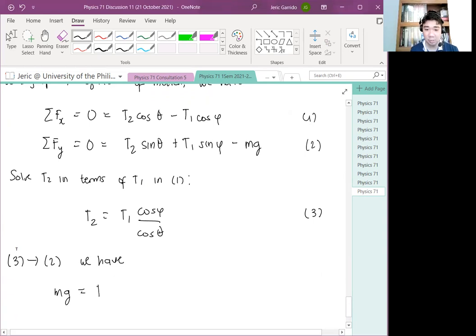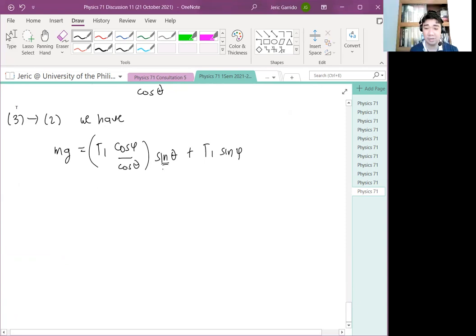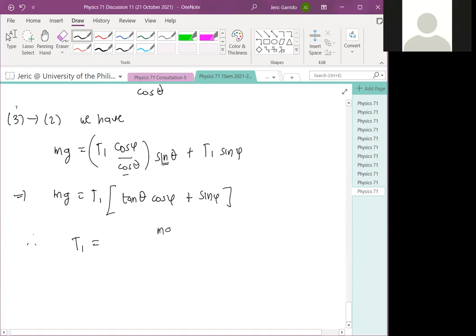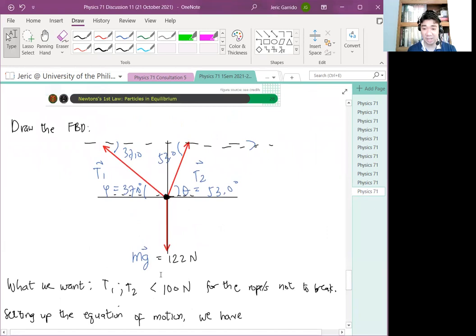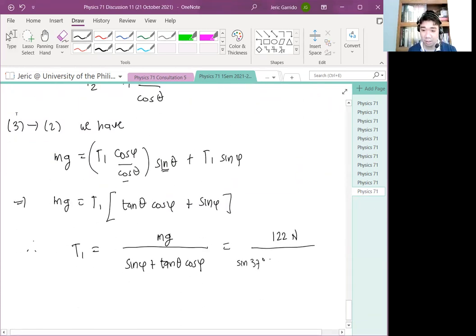Now substituting equation 3 to equation 2, we have, ilipat ko na yung mg sa kabilang side. So we have mg is just equal to T1 cosine phi over cosine theta multiplied by sine theta plus T1 sine phi. And then, note here, I have a cosine in the denominator. I have a sine in the numerator. So pwede ko sila i-divide. I get a tangent function. And this means that I also can isolate my T1 or factor out my T1. So you have mg equals T1 quantity tangent theta cosine phi plus sine phi. And thus, T1 is now equal to the weight of the object all over sine phi plus tangent theta cosine phi. And this is just equal to 122 newtons all over sine 37 plus tangent 53 cosine 37.